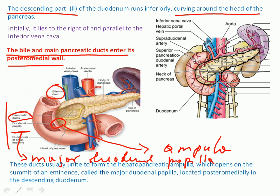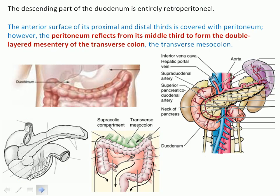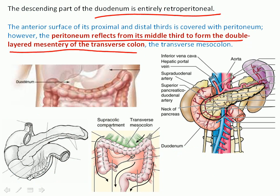The descending part of the duodenum is entirely retroperitoneal. The anterior surface of its proximal and distal thirds is covered by peritoneum; however, the peritoneum reflects at its middle third to form the double-layered mesentery of the transverse colon — the transverse mesocolon. The origin of the transverse mesocolon is from the peritoneum covering the descending part of the duodenum, as shown in the picture.